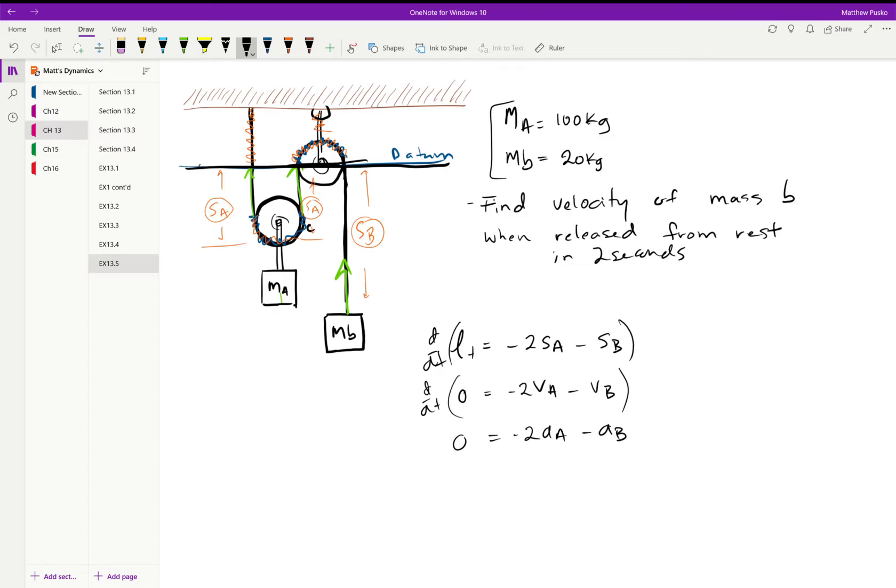This now says that the acceleration of B is equal to negative two times the acceleration of A. I'm going to call that equation number one. We're going to hold on to that, we will need it.